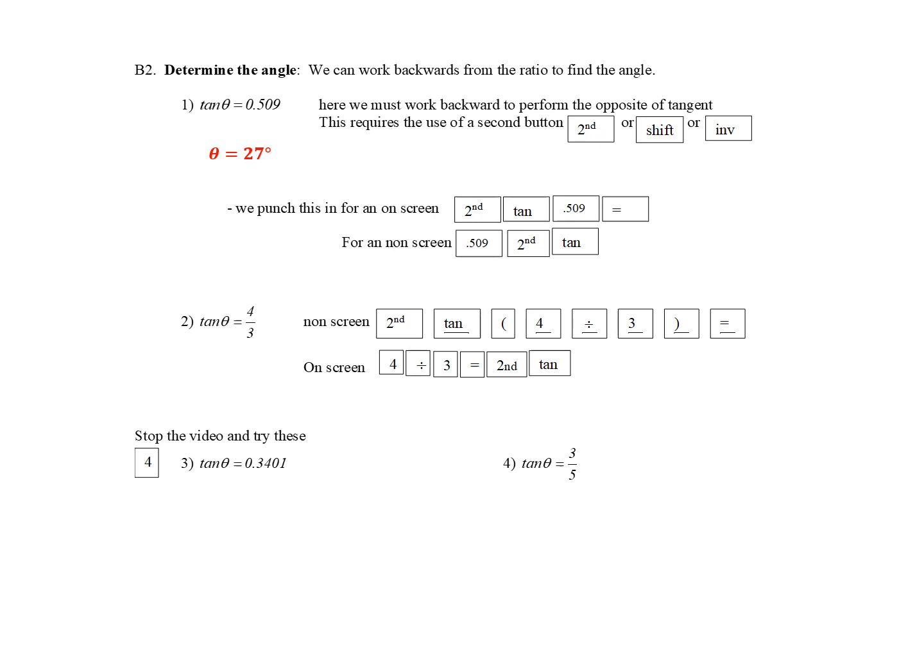Next, let's work backwards to figure out the angle. For number one we are given tan theta equals 0.509. We're given the ratio and we want to work backwards to figure out what the angle is. Anytime we work backwards on our calculators, we usually have to perform the opposite function. We use a button called second function or shift or inverse. For an on-screen, I would punch in second function tangent, which gives us the opposite of tangent, 0.0509, equals, and you should get an angle of 27 degrees. If you have a non-screen, you would start by punching in the ratio, then second function tangent. You might also need an equal sign.